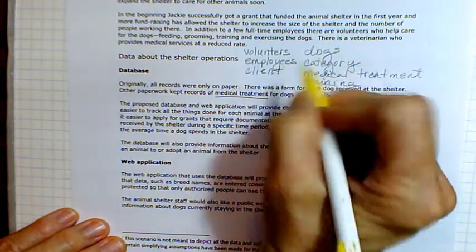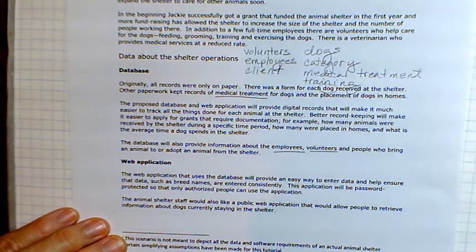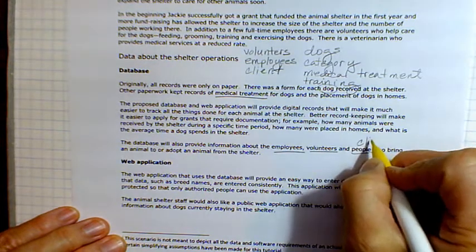We have what we're going to call client, which is a person who's either bringing an animal to the shelter, one that they have found, or a client is someone who's going to adopt an animal from the shelter.